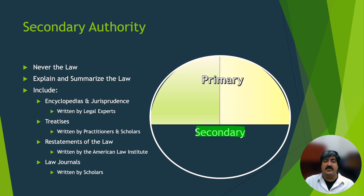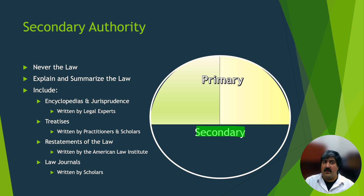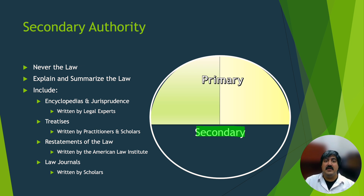This leads to a conversation about secondary authority. If primary authority is the law, what is secondary authority? Secondary authority is never the law — rather, it explains the law. Secondary authority includes encyclopedias and jurisprudence material, written by legal experts; treatises, written by practitioners and scholars; the restatements of the law, written by the American Law Institute; and law journals, written by scholars including students like yourself. There are of course many additional types of secondary authority, but this slide provides a baseline.